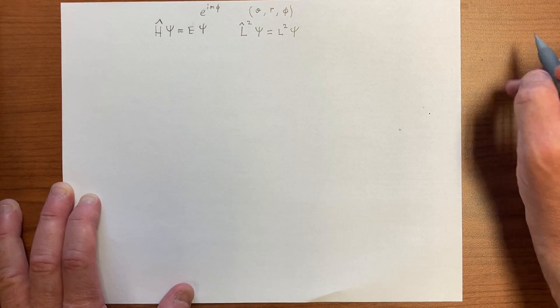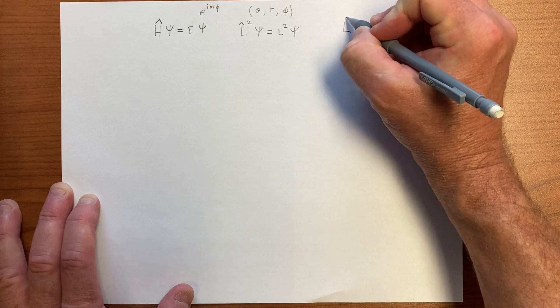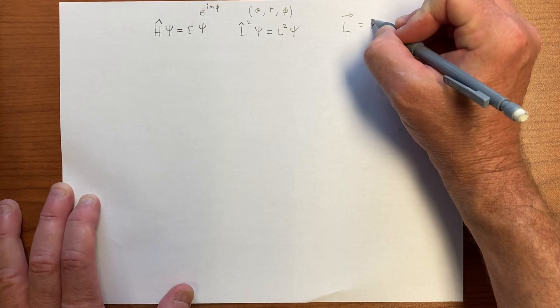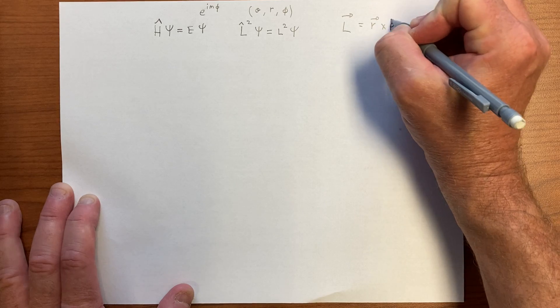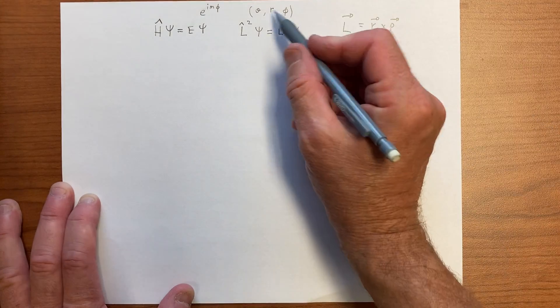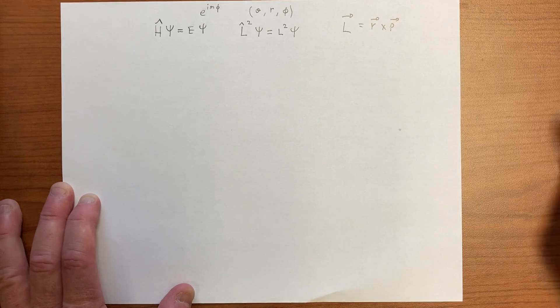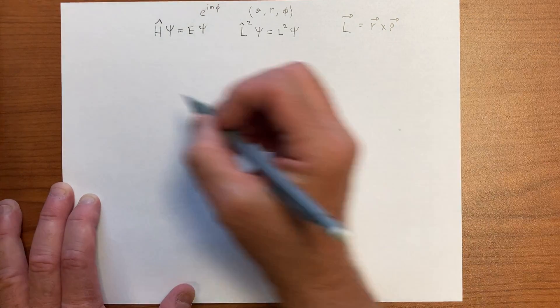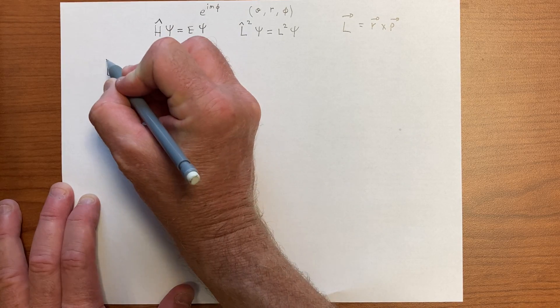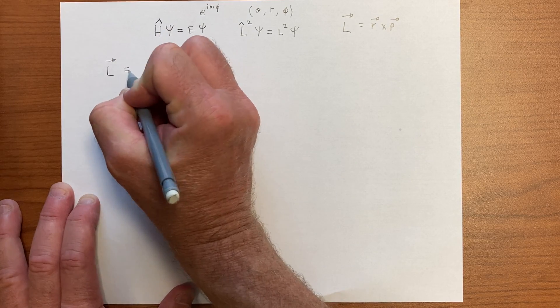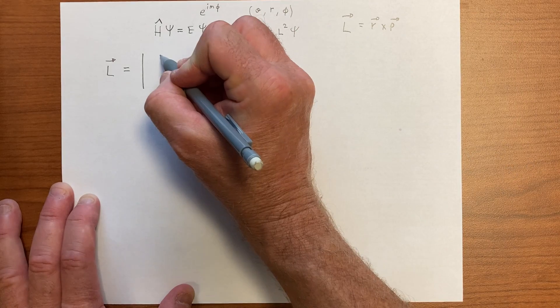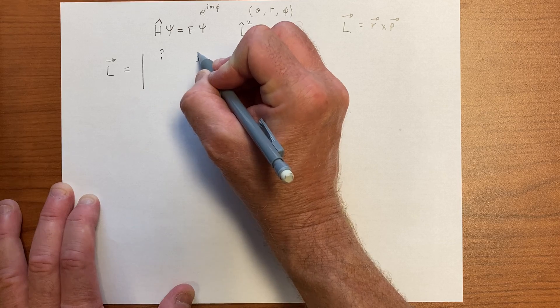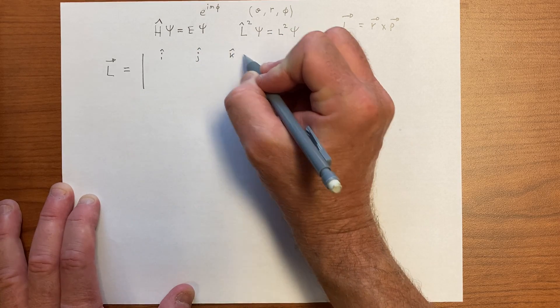So, angular momentum L is r cross p, and we have these coordinates, but maybe we have more intuition about angular momentum in Cartesian coordinates, so we can do that and then we'll just transform. The angular momentum vector in Cartesian coordinates has i hat, j hat, k hat.